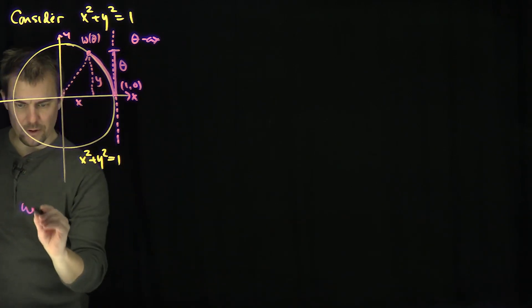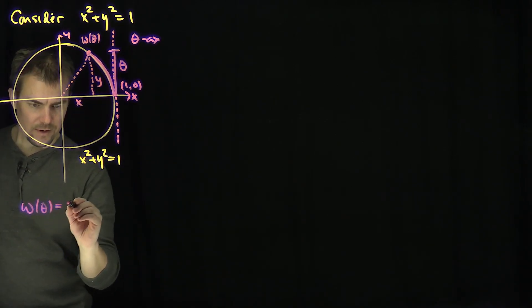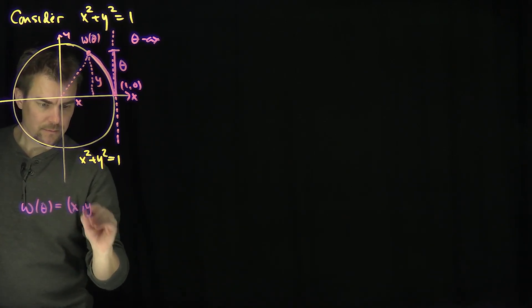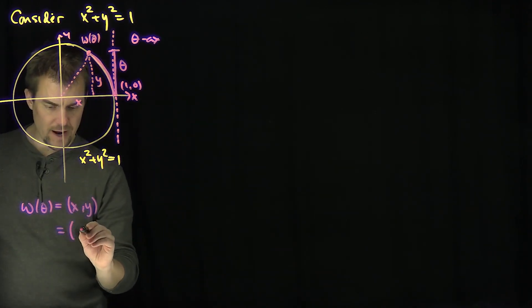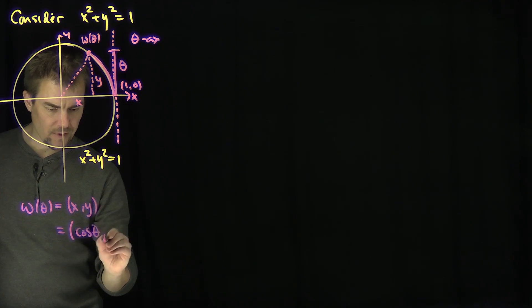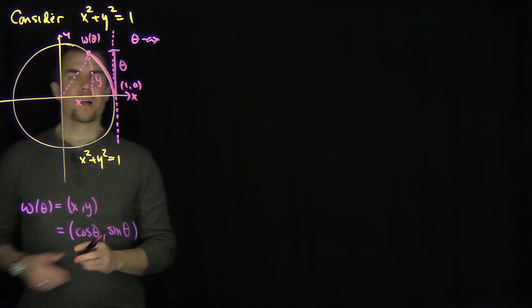So in other words, w(theta), the wrapping function of theta, is an (x, y). And we call this xy point the cosine of theta. The x-coordinate is called the cosine of theta, and the y-coordinate is called the sine of theta.